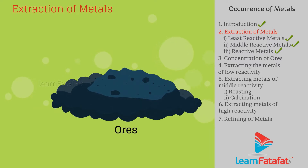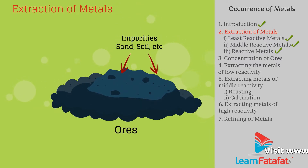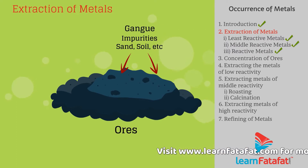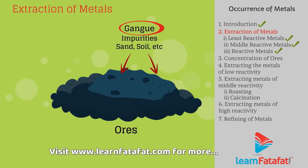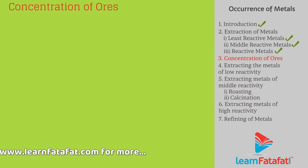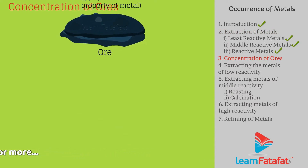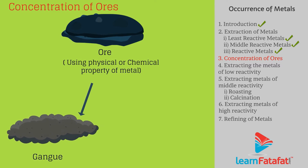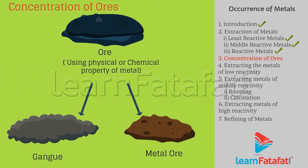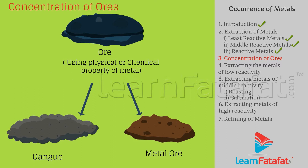Ores obtained from earth crust contain impurities such as soil, sand, etc., called as gangue. The gangue is separated from the ore using a suitable technique based on physical or chemical properties. This process is called concentration of ores.